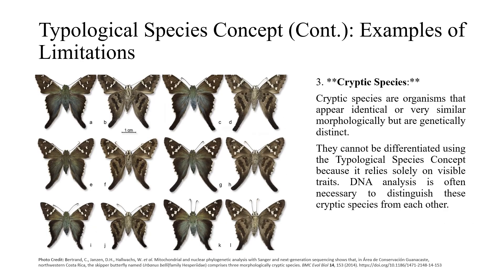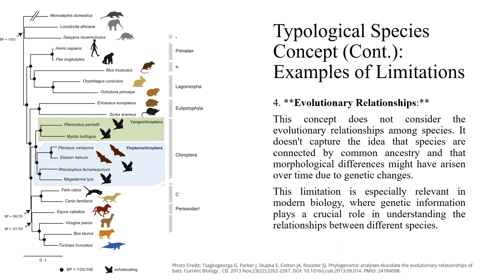Another limitation comes from cryptic species — organisms that appear identical or very similar morphologically but are genetically distinct. They cannot be differentiated using the typological species concept because it relies solely on visible morphology. DNA analysis is often necessary to distinguish cryptic species from one another. Additionally, this concept lacks evolutionary insight, as it appeared before the idea of evolution came up among biologists. It doesn't consider evolutionary relationships among species or capture the idea that species are connected by common ancestry and that morphological differences may have arisen over time due to genetic changes — especially relevant in modern biology.